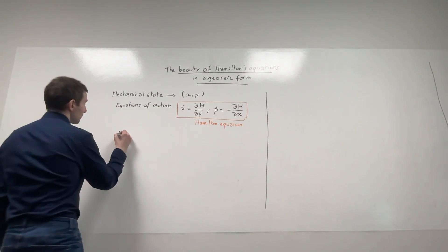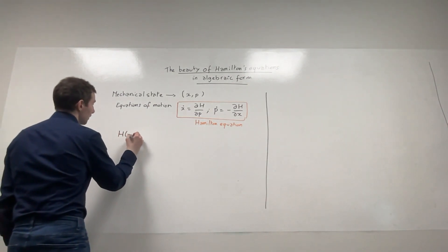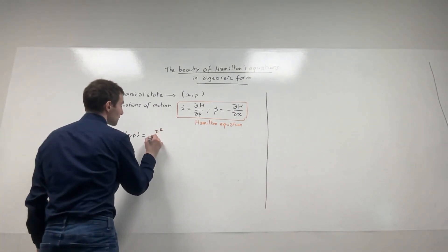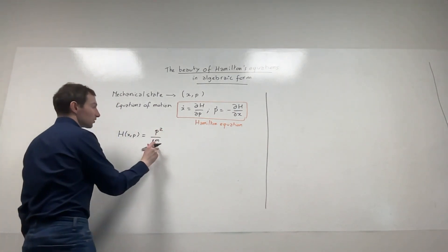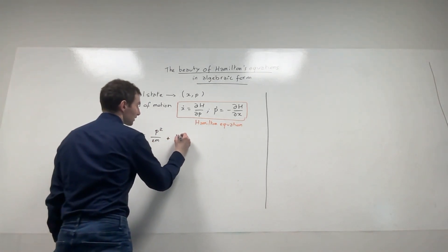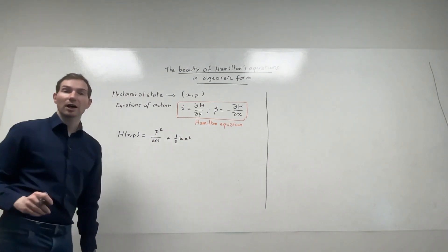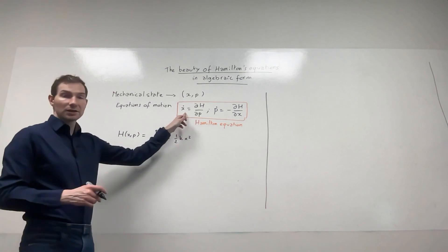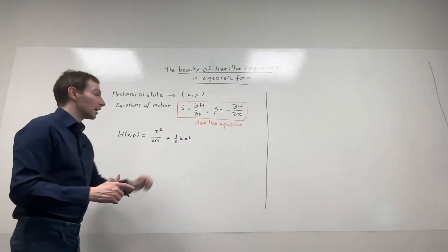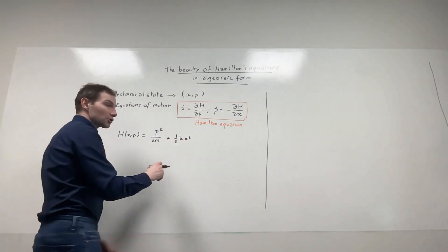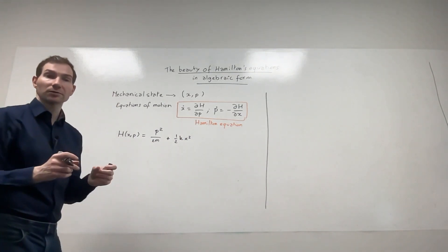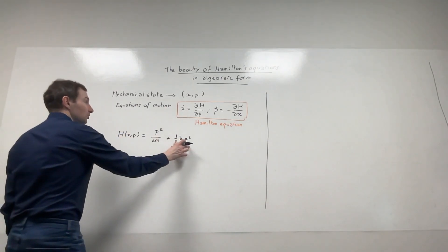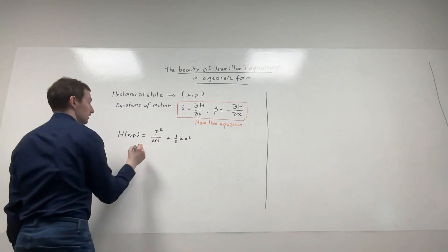As a traditional example — and I'm using this one on purpose — in a non-relativistic setting, the Hamiltonian is P squared over 2M plus K X squared. This represents a harmonic potential, perhaps owing to a spring, a laser trap, or a harmonic oscillator. What we can directly deduce from this are the equations of motion.